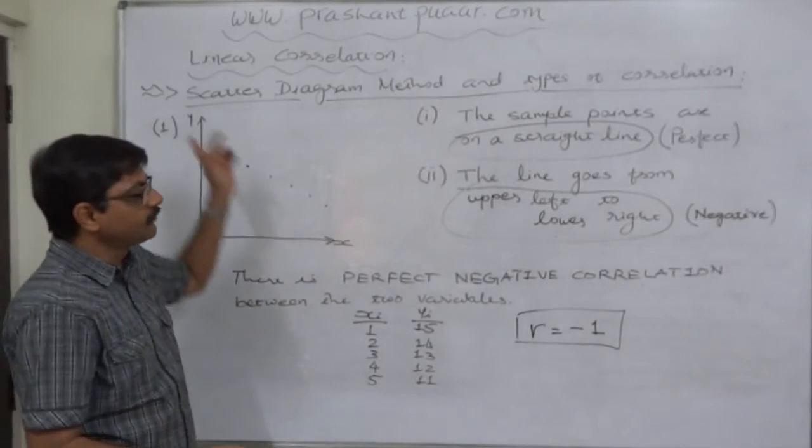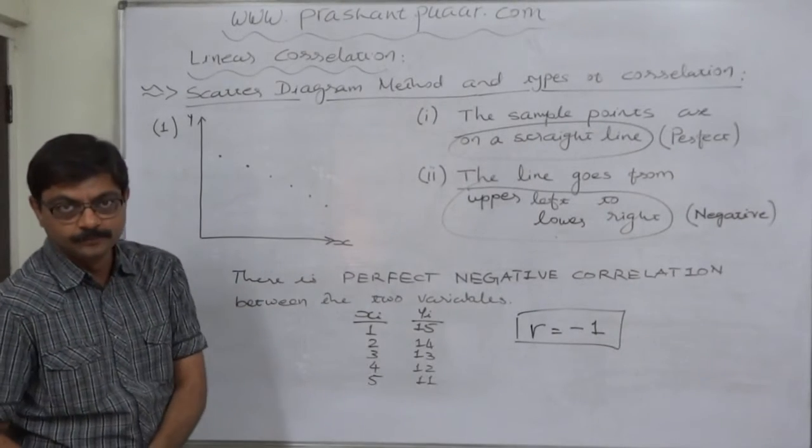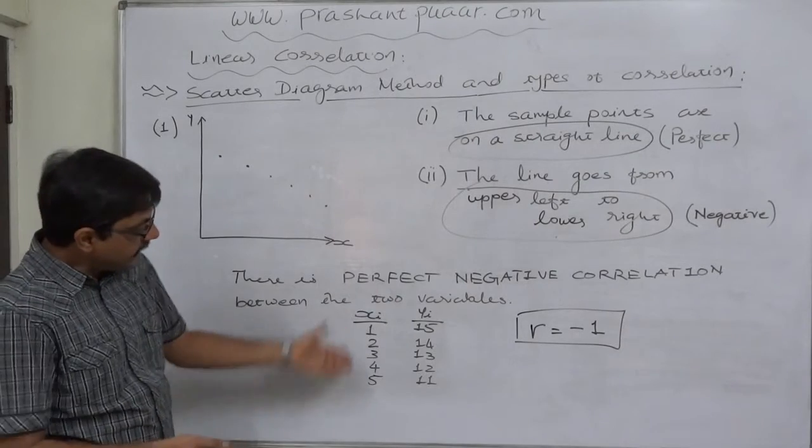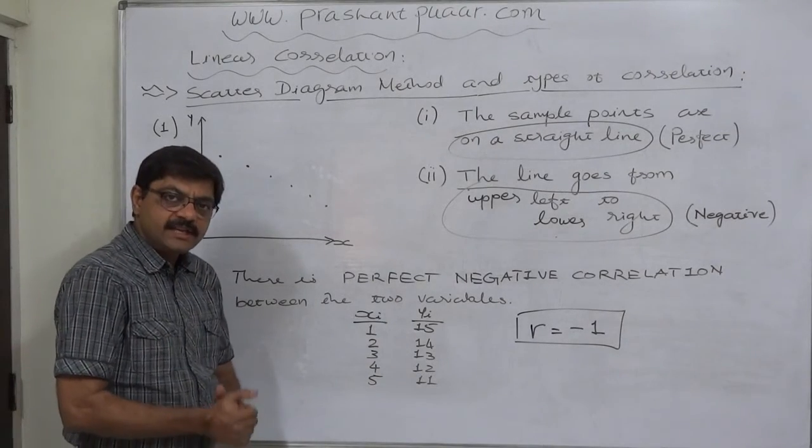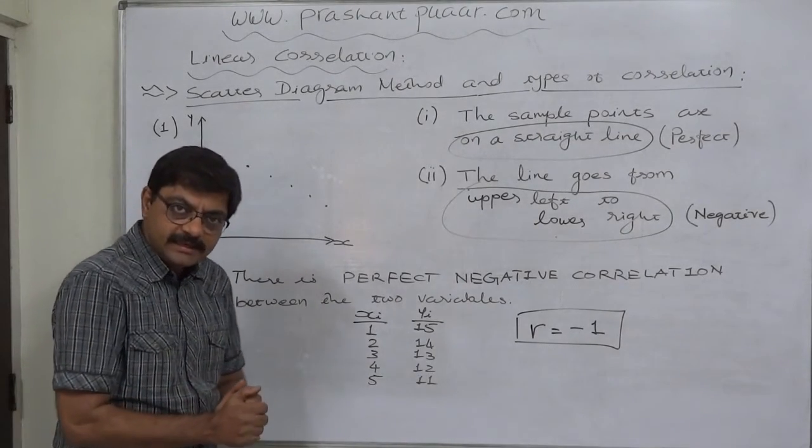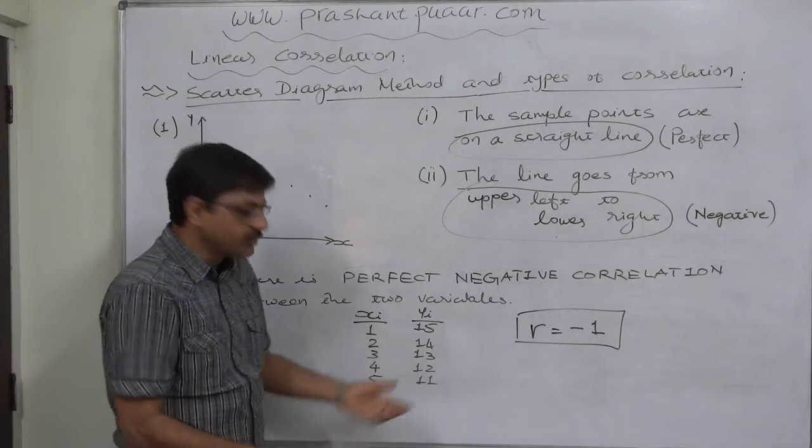In other words, when the direction of change in the values of the variables is every time opposite to each other, then we get the perfect negative correlation.